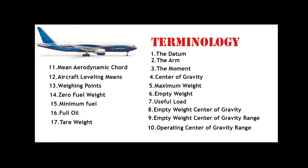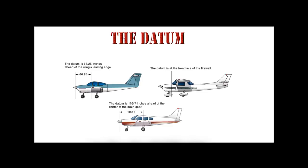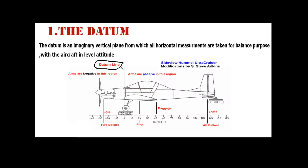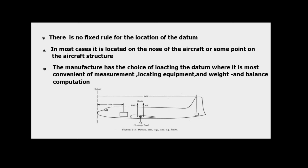The Datum is an imaginary vertical plane from which all horizontal measurements are taken for balance purposes. With the aircraft in level flight attitude, the datum location is indicated on most aircraft specifications. Once the datum is selected, it must be properly identified so that anyone who reads the figures will have no doubts about the exact location. There is no fixed rule for the location of the datum.